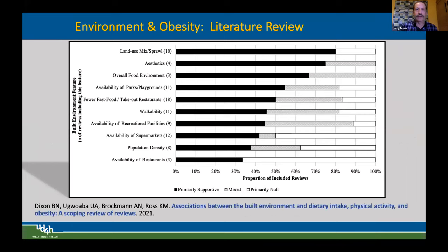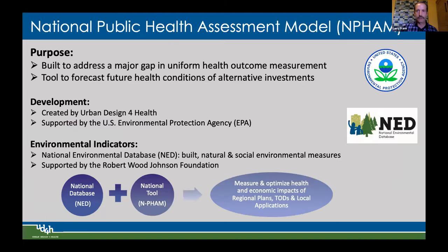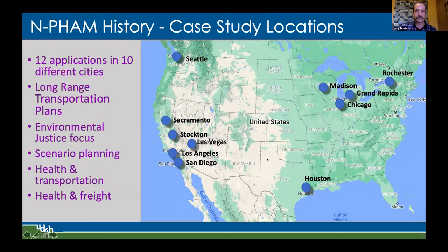There's now a substantial literature on this topic — a review of reviews — with land use mix and sprawl at the top, most studied and significantly associated with obesity reduction, along with aesthetics, food environment, parks, and more. The art and skill is translating that into a tool such as the National Public Health Assessment Model, or NFAM, which is built to address the gap: uniform health outcomes measurement for decision makers to forecast future health conditions of alternative investments. Funded by US EPA with support from the National Environment Database funded by Robert Wood Johnson Foundation.